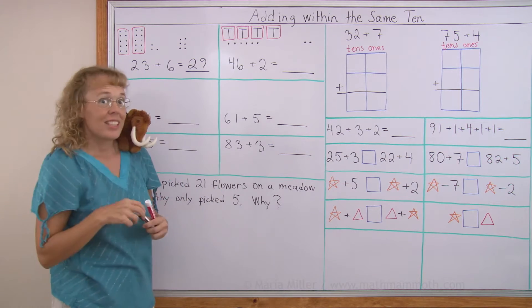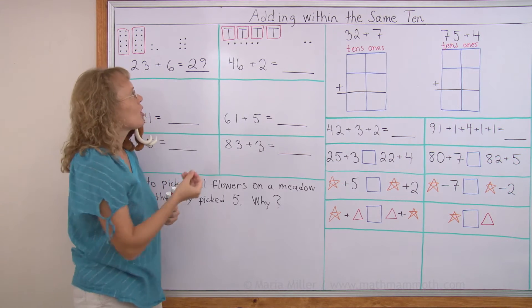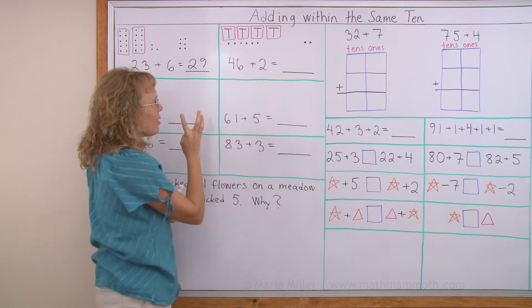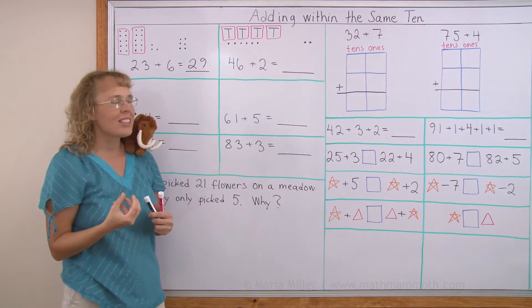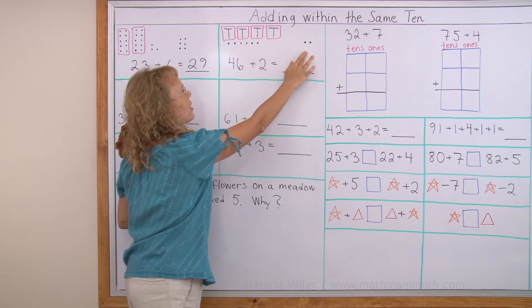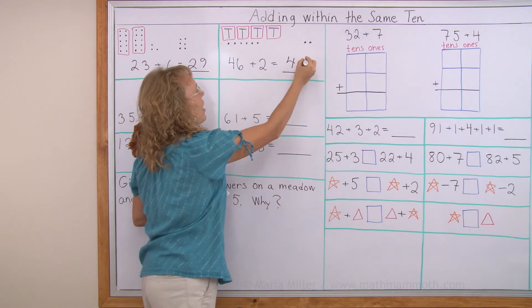Let's try it here too. This time this box with T is a 10. So again I have a model that shows me 4 10s and 6, 46. And then I add two little dots or two 1s to it. And so 46 plus 2. I have 4 10s and 6 plus 2 is 8. So the answer is 4 10s and 8, 48.